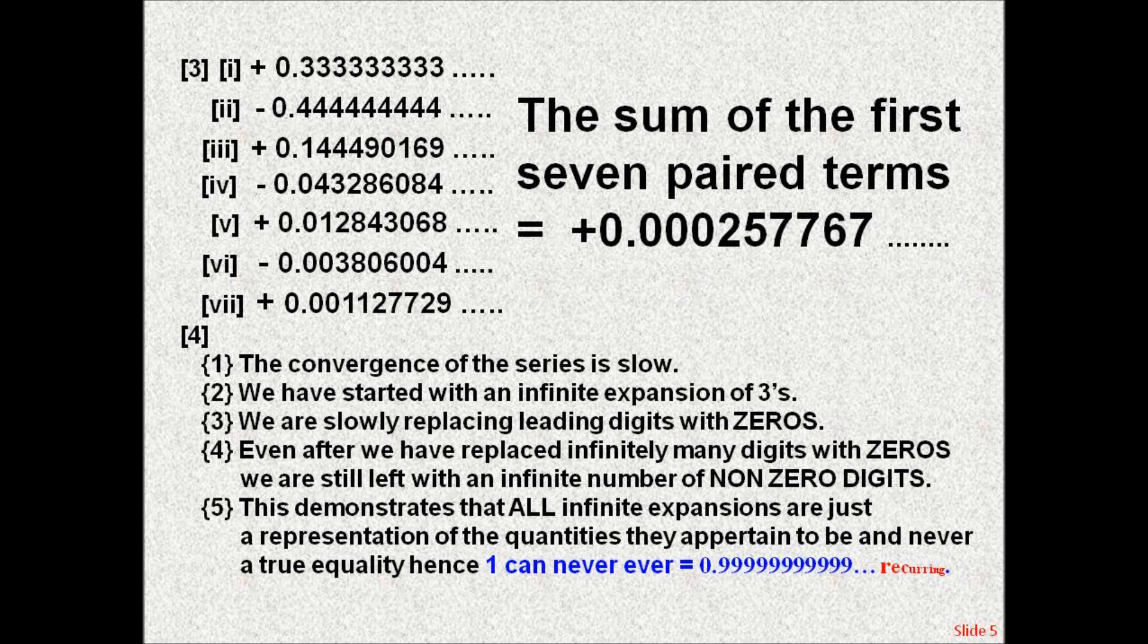1. The convergence of the series is slow. 2. We have started with an infinite expansion of threes. 3. We are slowly replacing leading digits with zeros. 4. Even after we have replaced infinitely many digits with zeros,